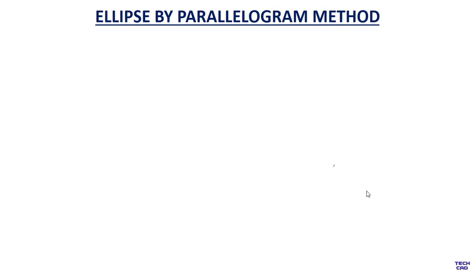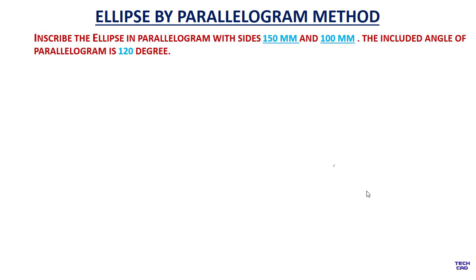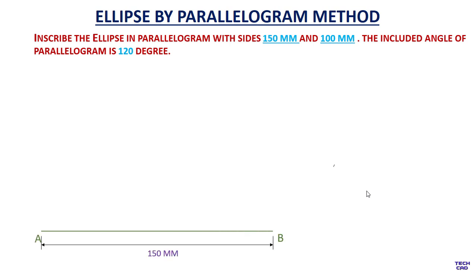Hello everyone. In this video we are going to understand how to make an ellipse with the help of the parallelogram method. You have to make an ellipse in a parallelogram with sides 150 mm and 100 mm and the included angle is 120 degrees. First of all, make a 150 mm line and name it AB.